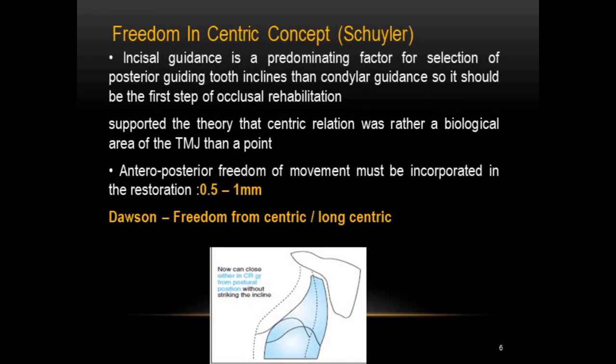The next concept is the freedom in centric concept proposed by Schuller. Here, incisal guidance was considered the predominating factor, whereas in the nathological concept it was the condylar path. Schuller proposed that centric relation was not just a point, but rather a biological area of the TMJ. He advocated an anterior-posterior freedom of movement in centric relation position of around 0.5 to 1 mm, which is called the freedom in centric concept.